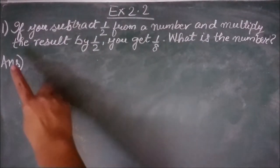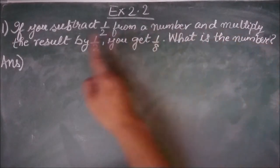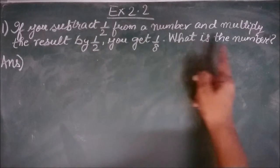Exercise 2.2, question number 1. If you subtract 1 by 2 from a number and multiply the result by 1 by 2, you get 1 by 8. What is the number?